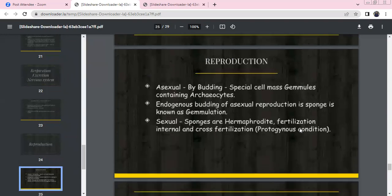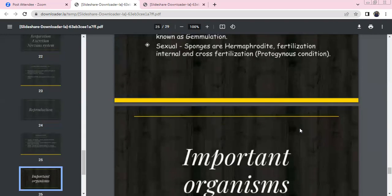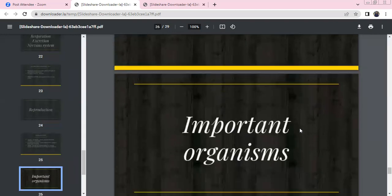Reproduction: Asexual reproduction occurs by budding. Specialized cell masses called gemmules form from archaeocytes (endogenous budding). Sexual reproduction: Sponges are usually hermaphrodite. Fertilization is internal, and cross-fertilization occurs. They are protogynous, meaning female reproductive organs mature first.